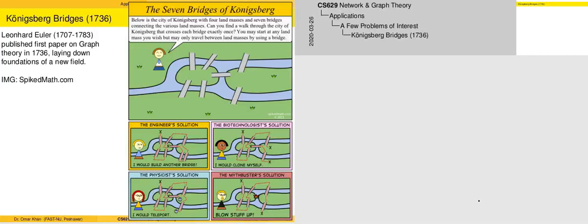We are going to look at some well-known classical problems in the field of graph theory. These problems give some idea of how graph theory is used in various applications. The first in this set of problems is the Königsberg Bridges problem. It was a long-standing issue which was solved by Leonard Euler in 1736, and the solution turned out to be the first paper ever in the field of graph theory. This marked the creation of a new field in pure mathematics.